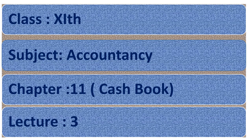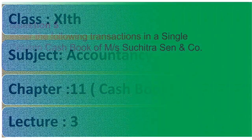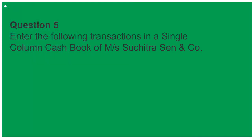Hello Class 11, this is your subject Accountancy, Chapter 11, Cash Book, Lecture 3. In our last lecture I told you about the solution of cash book till question number 4. So let's start question number 5: Single Column Cash Book of Messrs. Suchitra CNN Company. First of all, read this question carefully.